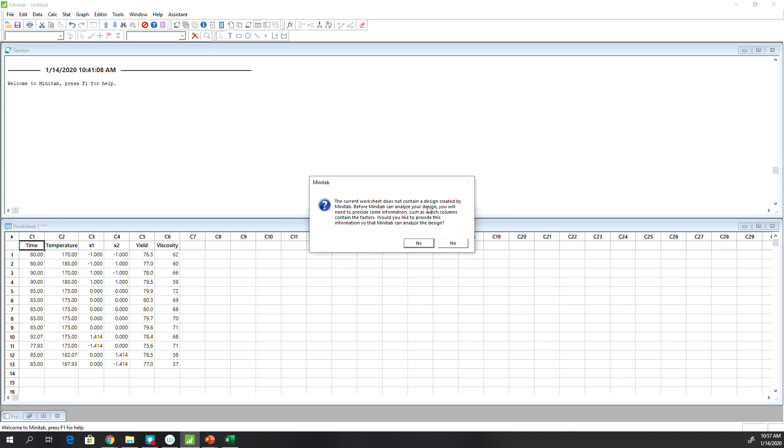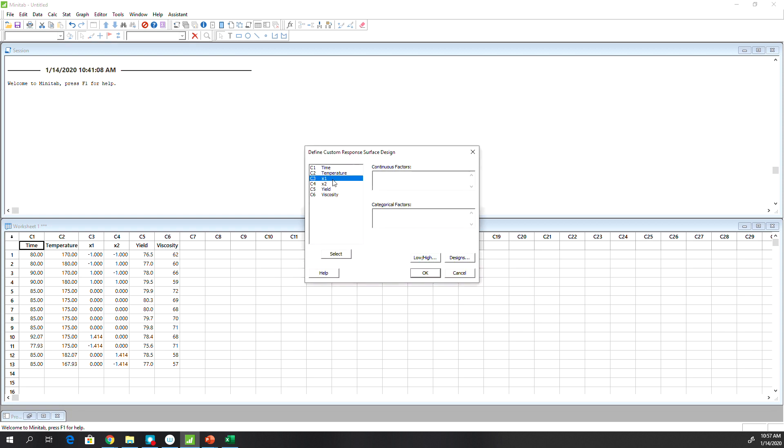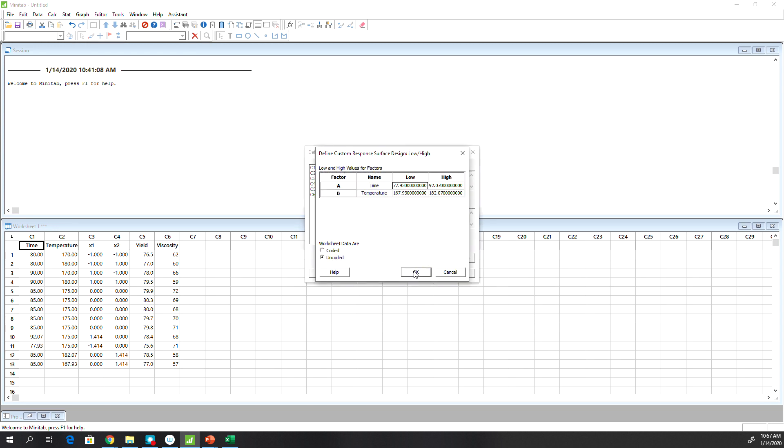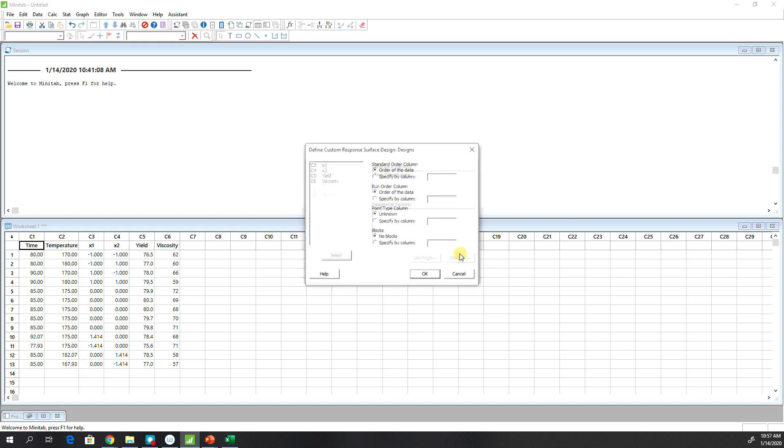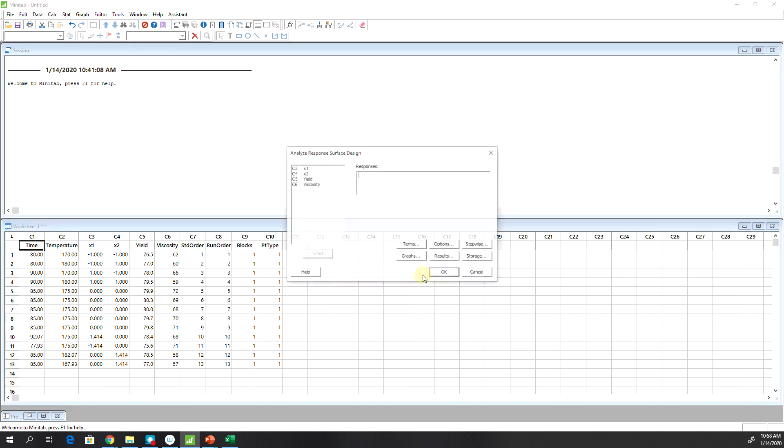It says it cannot analyze because you haven't created it. Just hit yes. Continuous, I have temperature and time variable. Low, high, just have to hit it. Otherwise Minitab will not run. Keep everything default. Hit OK.